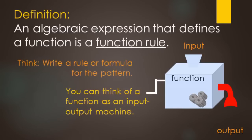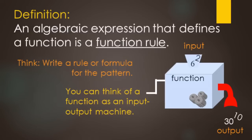An algebraic expression that defines a function is called a function rule — you can also think of it as a formula or an equation. Using a function machine: if you put in a 2 and get out a 10, or put in a 6 and get out a 30, you're multiplying by 5. So if you put in x, you get out 5x. The function rule would be y equals 5x — we're writing a rule for the pattern.